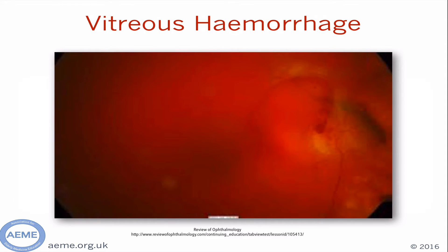Vitreous haemorrhage is often a problem in patients who have diabetes or who have had trauma. It will be very difficult to see anything other than blood on ophthalmoscopy, and this is the kind of view that you might get.